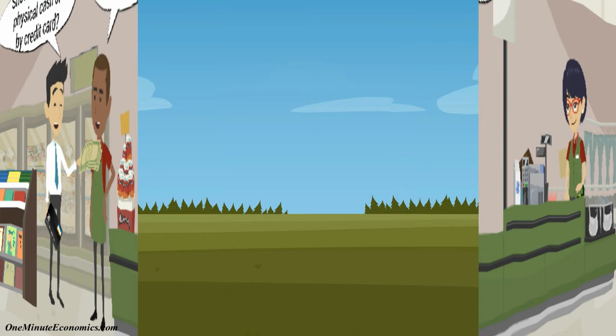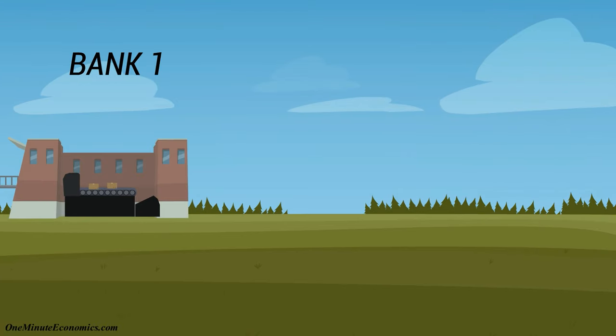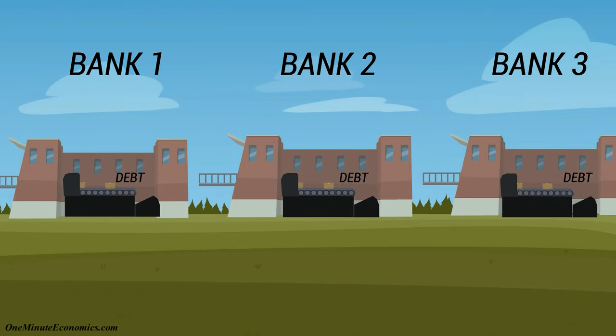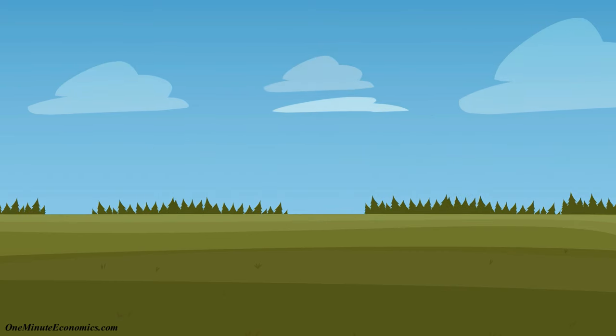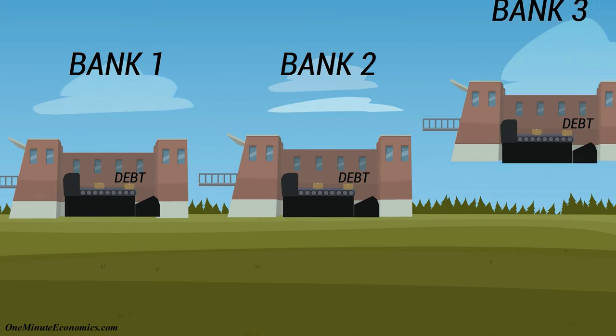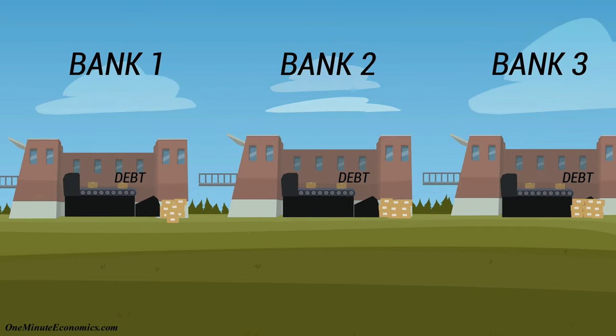Therefore, as explained in the fractional reserve banking video, commercial banks create money as well by issuing loans. And since most of the money in existence is not physical, commercial banks actually create more money than central banks.